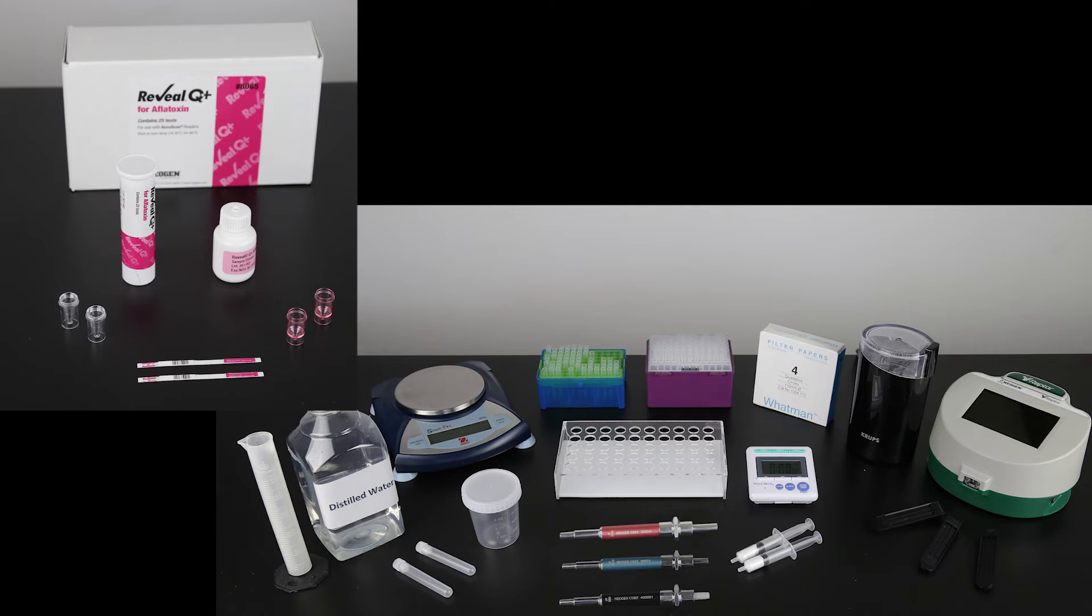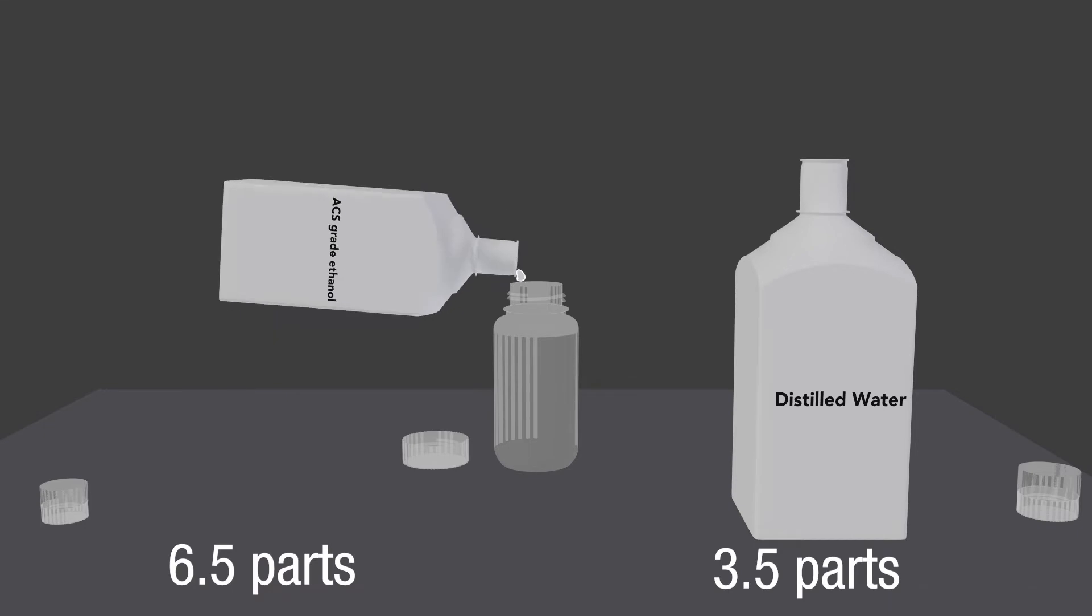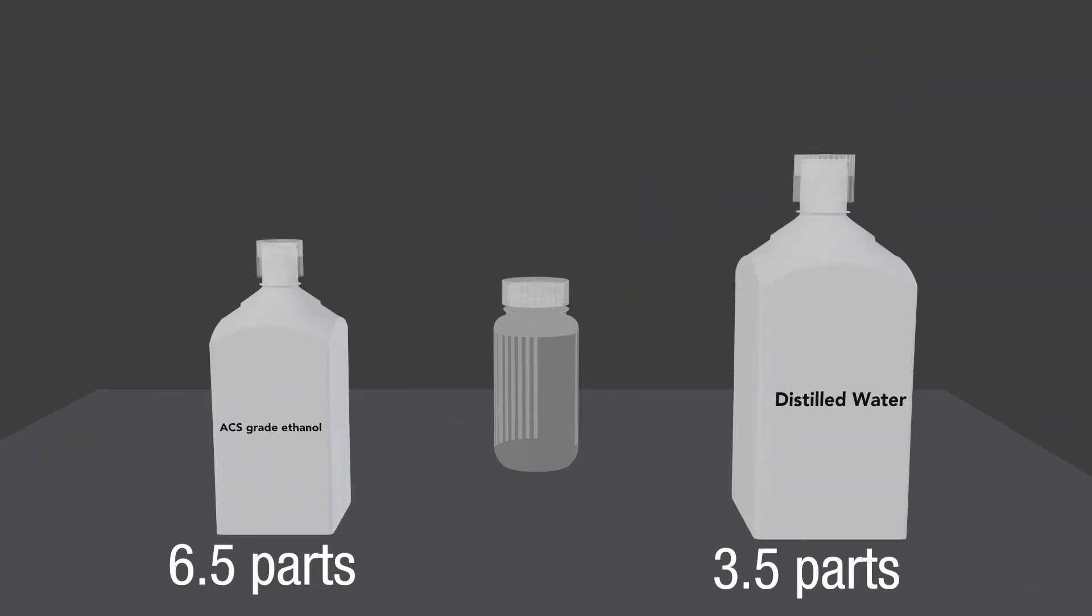To prepare the sample, begin by gathering all the materials required. If not using Neogen's prepared solution, make a 65% ethanol solution by mixing 6.5 parts ACS grade methanol with 3.5 parts distilled or deionized water for each sample.